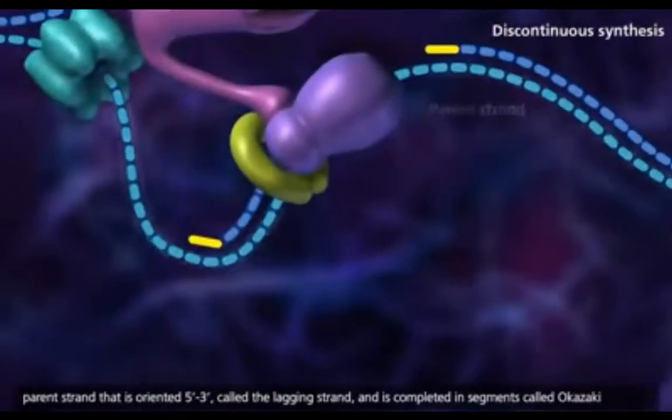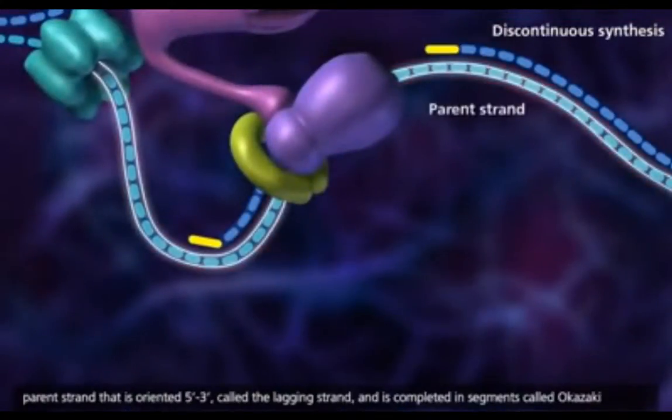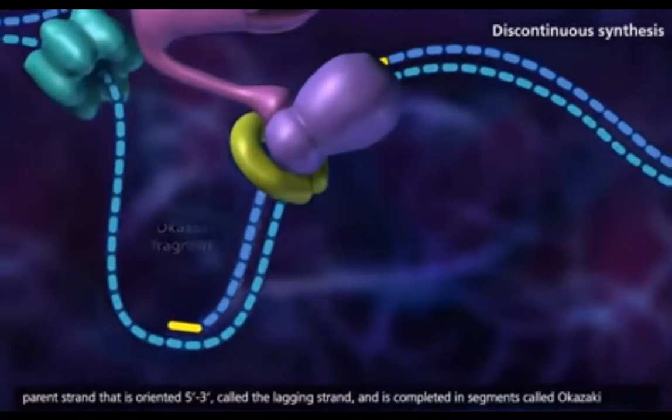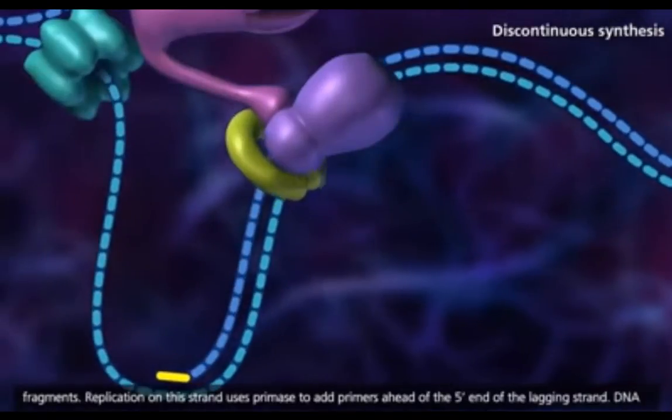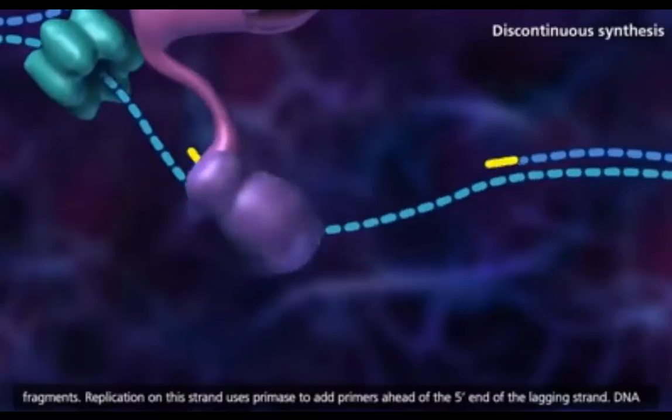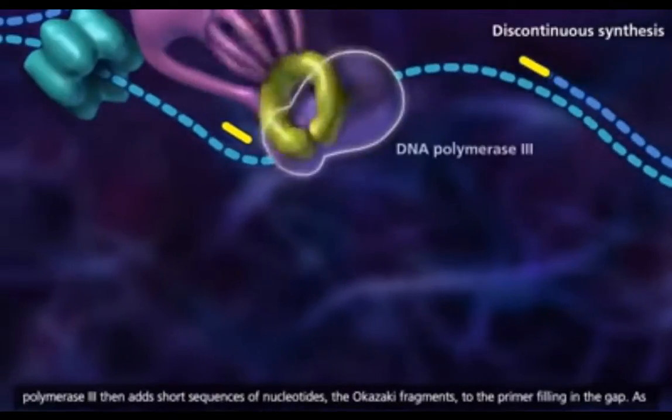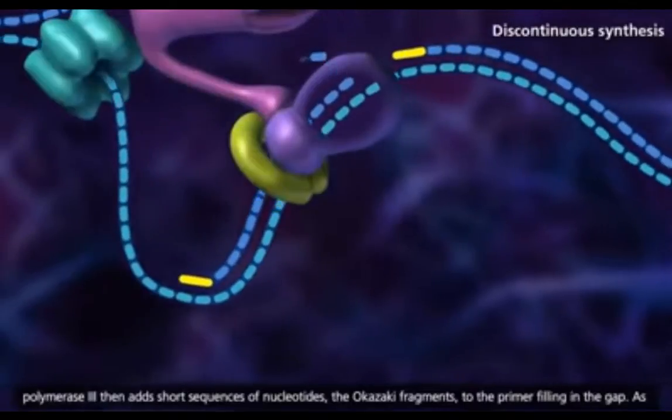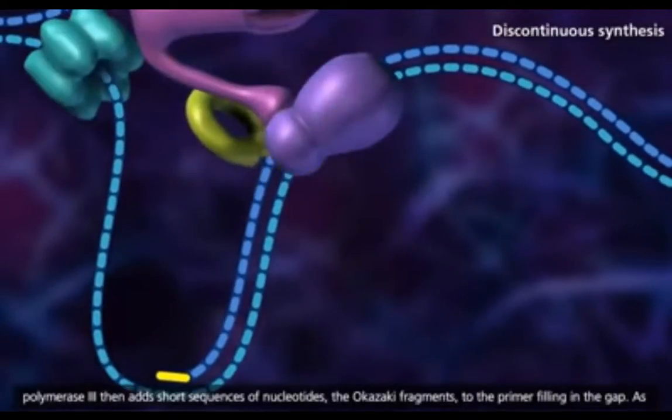Discontinuous synthesis occurs on the parent strand that is oriented 5' to 3' called the lagging strand, and is completed in segments called Okazaki fragments. Replication on this strand uses primase to add primers ahead of the 5' end of the lagging strand. DNA polymerase 3 then adds short sequences of nucleotides, the Okazaki fragments, to the primer filling in the gap.